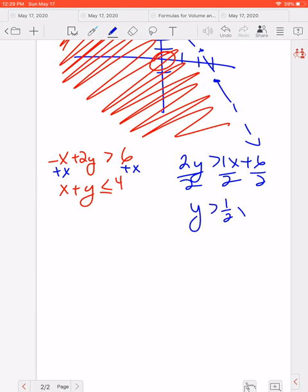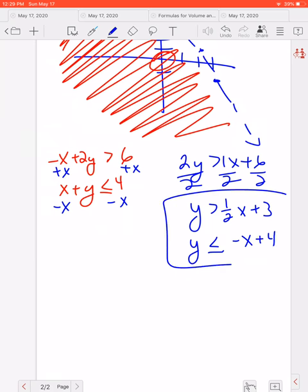So we'd have y is greater than 1 half x plus 3 for our first one. And here we just need to subtract x over. So we're going to have y is less than or equal to negative x plus 4. And those are our two equations that we're going to graph on the same graph.